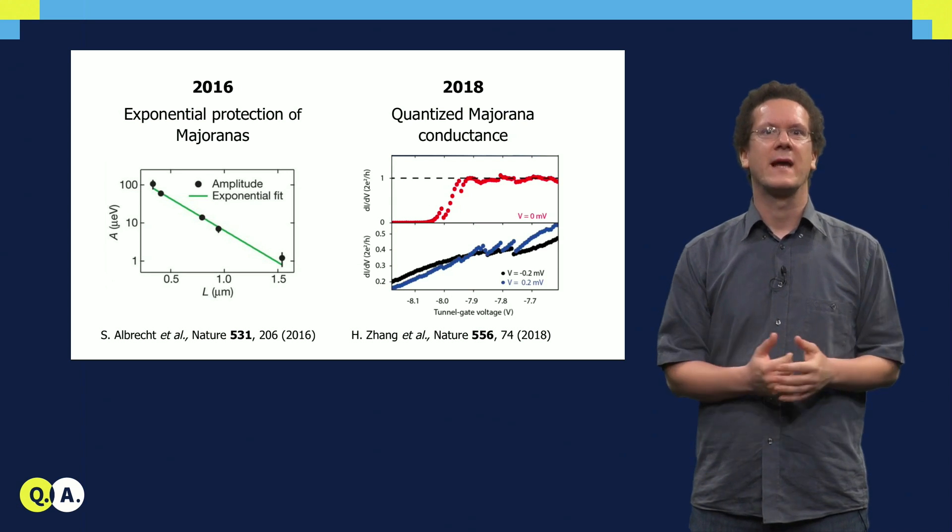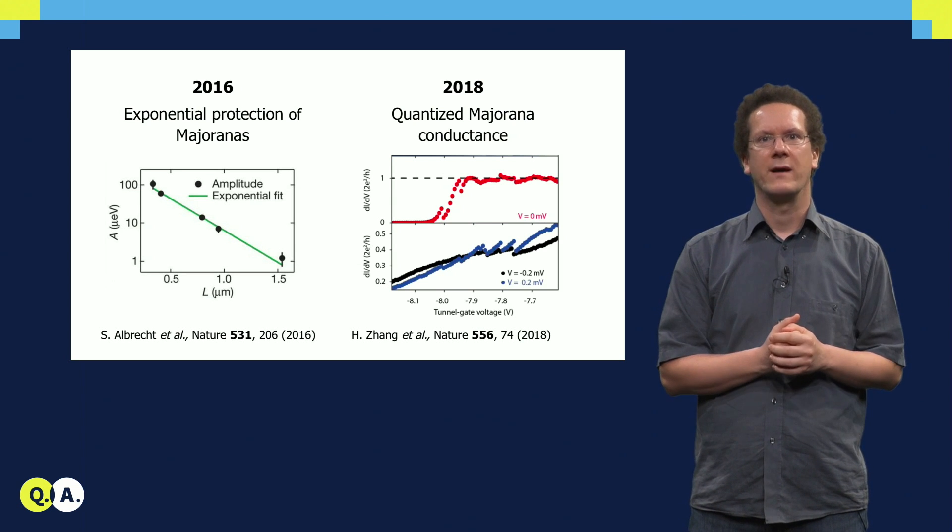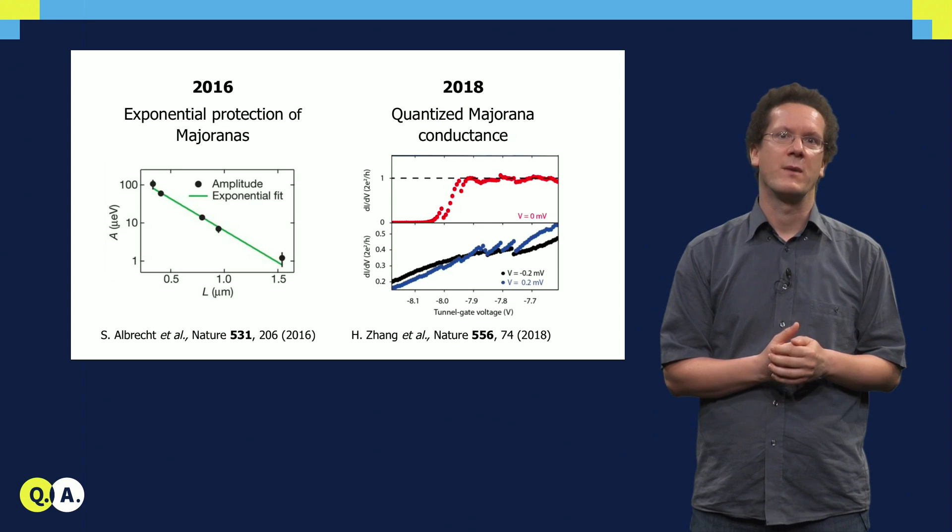Another important milestone was again in Delft in the group of Leo Kouwenhoven. After optimizing the nanowires, they found a quantized conductance peak of the Majorana bound states.